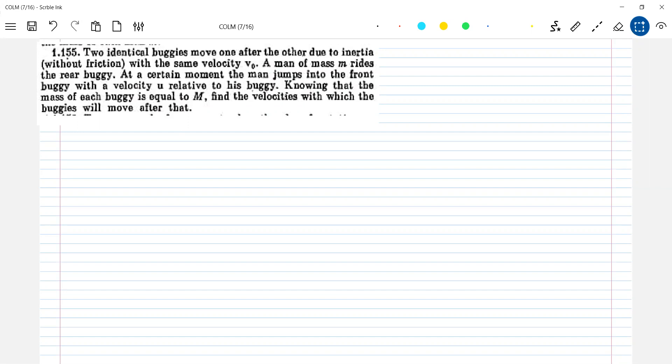Two identical buggies or trolleys, both are the same, move one after the other due to inertia without friction with the same velocity v0. A man of mass m rides the rear buggy. Mass of the buggies, let me write m1 and capital M, m2. Take care of the diagram.